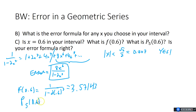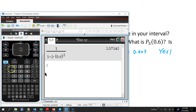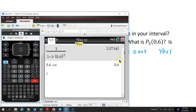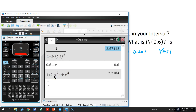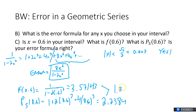For p5(0.6), I'll plug 0.6 in for x. I'll store 0.6 as x in the calculator and compute 1 + 2x² + 4x⁴. That gives me 2.2384. The difference between 3.57143 and 2.2384 gives me 1.33303. If they ask you for the error, make sure you're at three decimal places.